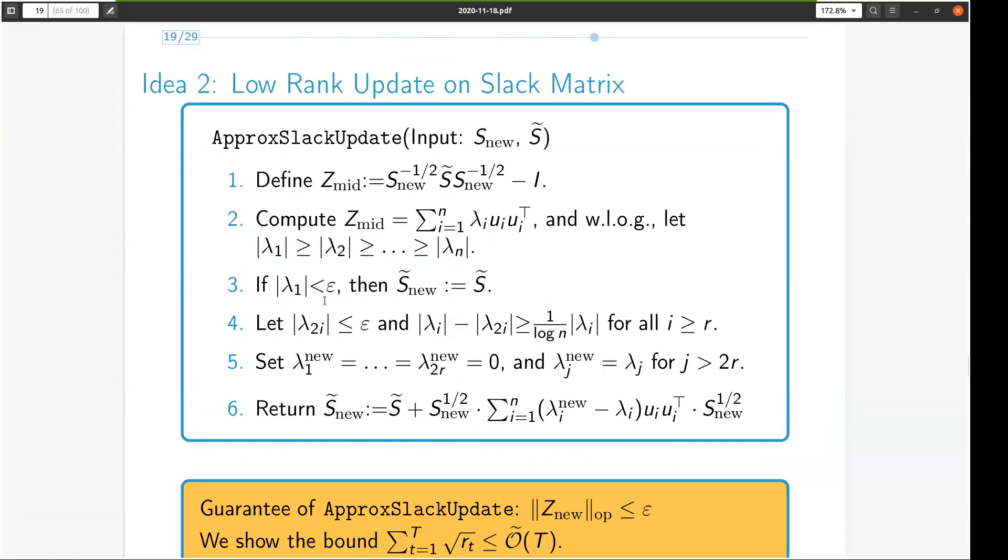Further, since the largest eigenvalue magnitude of z nu is epsilon, this implies the operator norm guarantee we claimed earlier in our proof sketch of correctness. Later on, we show this bound on the rank of the update to s tilde in each step. And this bound turns out to be useful in showing an improved runtime bound as we see next.